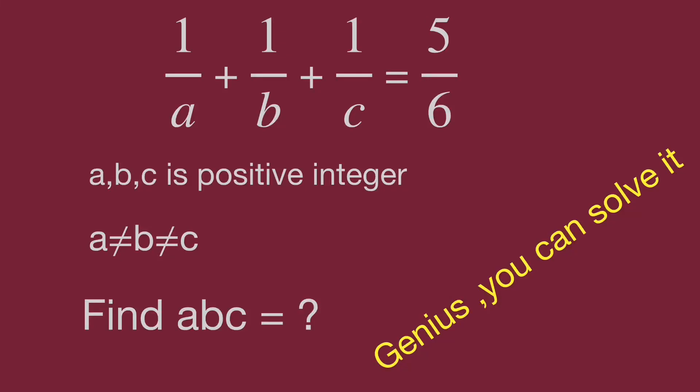Hello, you are watching Barahippo Math General Riddles. Here's a challenging fraction question. We have 1 over A plus 1 over B plus 1 over C equal to 5 over 6. A, B, C are positive integers, A not equal to B not equal to C. Find the values of A, B, C.